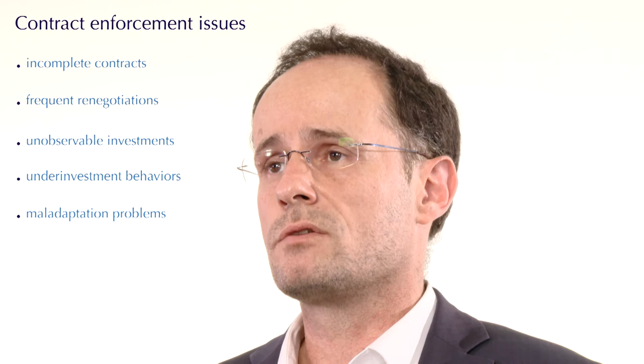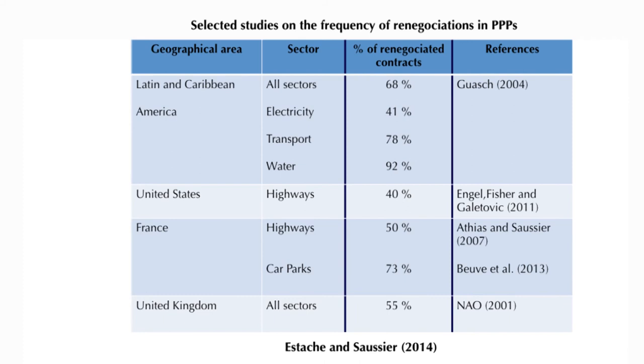If you succeed in selecting your partner — the first step — then Oliver Williamson and transaction cost economics more broadly suggest that you are likely to fail at the second step: contract enforcement. Long-term contracts are incomplete. Renegotiations occur frequently. Investments are often not observable and unverifiable, leading to under-investment behavior by contracted firms. Maladaptation problems also arise. Just to convince you that enforcement is not without cost and problems, here is a table showing how frequently contracts are renegotiated in different sectors and different countries. Whatever the country, whatever the sector, public contracts are characterized by a high probability of renegotiation. Renegotiations are the rule, not the exception.